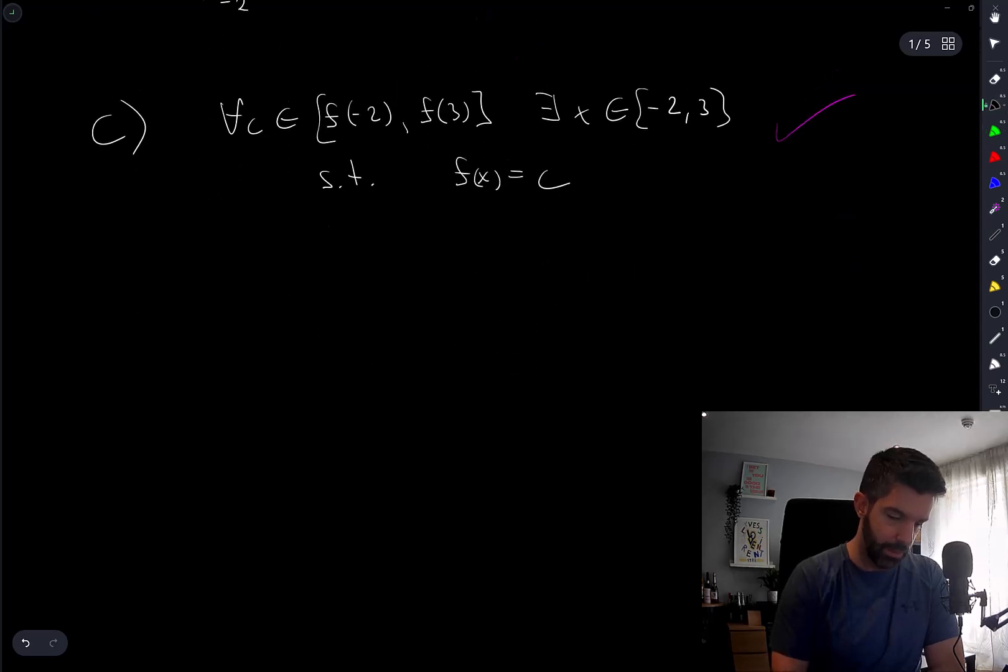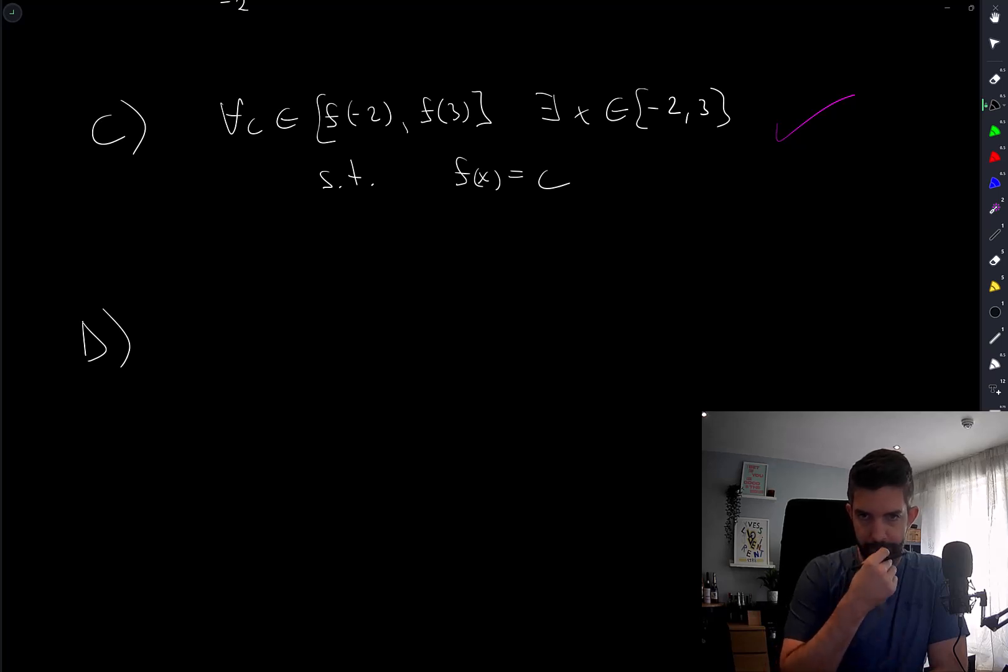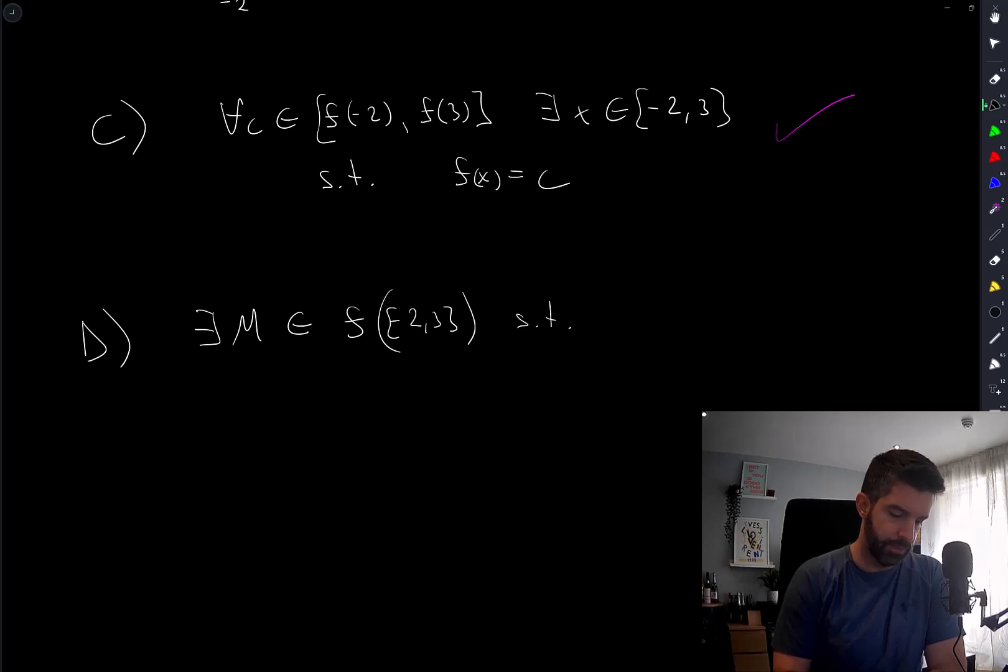Option D, there is an m in the range of f, such that the integral of f is equal to 5m. Hold on. So there exists an m in f of negative 2, 3, such that the integral of negative 2 to 3, f of t dt, is equal to 5m. This looks false.